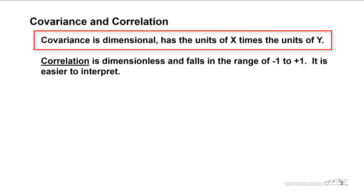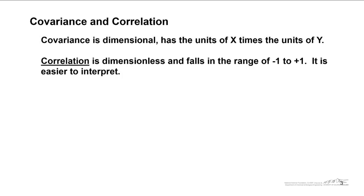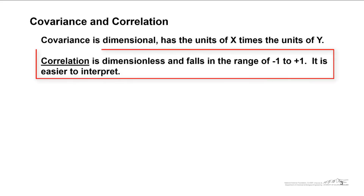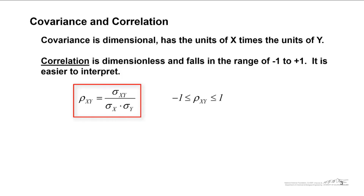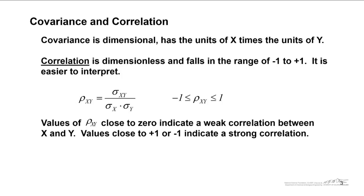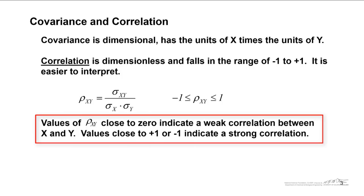Covariance is dimensional — it has the units of x times the units of y. Often, we're interested in normalizing this into a dimensionless number, and in that case we calculate something known as correlation. You may have heard of the correlation coefficient, or r-squared. Correlation is dimensionless and falls in the range of negative 1 to positive 1, and is often easier to interpret. Correlation rho_xy is defined as the covariance sigma_xy divided by sigma_x times sigma_y. Values close to 0 indicate weak correlation, and values close to positive 1 or negative 1 indicate strong correlation.